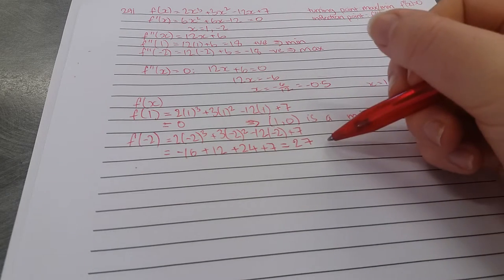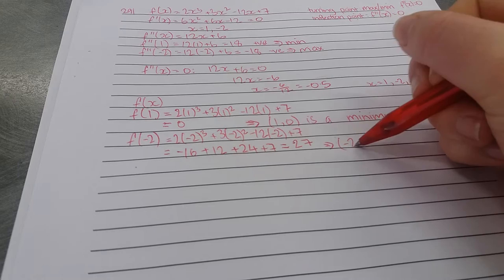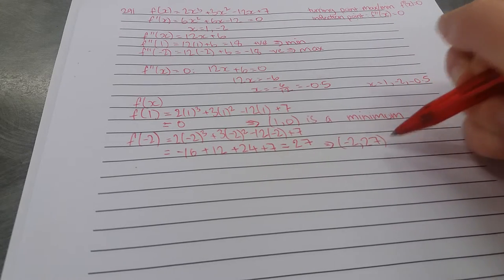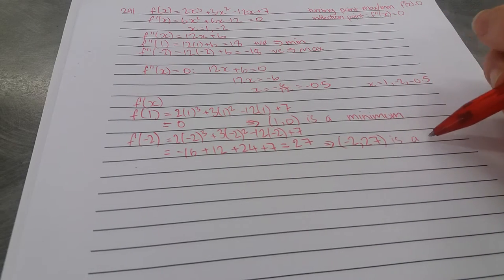So we've got our second point, (-2, 27) is a maximum.